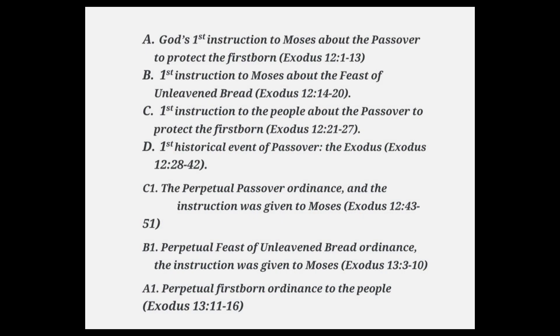This chiastic structure emphasizes the important points or themes in writings. Let me give you an example by demonstrating how it is used in chapters 12 and 13 of Exodus. The sequence is A, B, C, D, C1, B1, A1, and these represent the sections of Exodus 12 and 13.